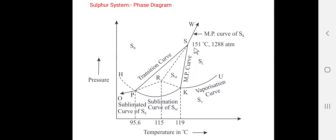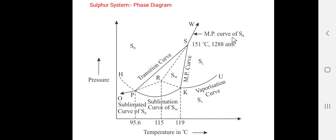The fourth stable curve is curve KS, called the melting point curve of SM (monoclinic sulfur). The fifth stable curve is curve PS, called the transition curve of SR and SM, that is rhombic sulfur and monoclinic sulfur. The sixth stable curve is curve SW, called the melting point curve of SR (rhombic sulfur). These are the six stable curves.